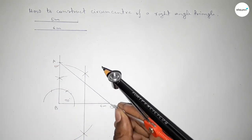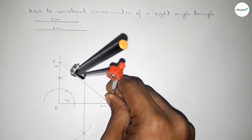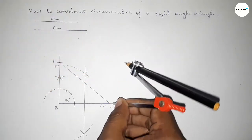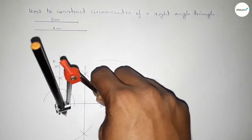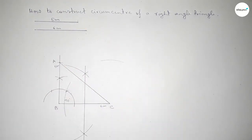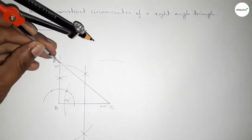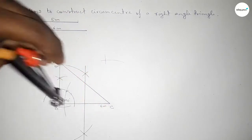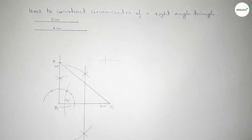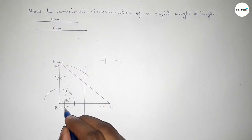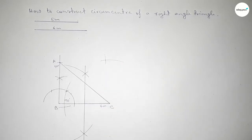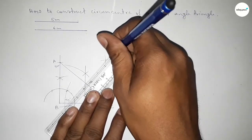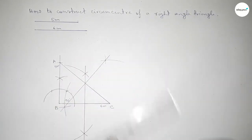Next we have to bisect the line AC. Putting the compass at one end and taking greater than half of AC, draw an arc. With the same length from the other end, cut here so both curves intersect at two points. Join this perpendicular bisector.